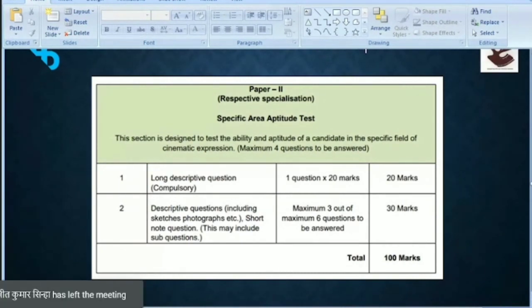The long descriptive question will be compulsory, one question for 20 marks. Then there will be descriptive questions where you answer maximum 3 out of maximum 6 questions, worth 30 marks. There is a possibility that you may have sub-questions within the broader question.